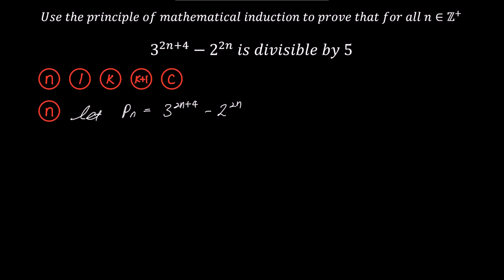Next, step 1 involves checking if the first term is true. p1 equals 3 to the power of 2 plus 4 minus 2 to the power of 2, which simplifies to 3 to the power of 6 minus 4, and that equals 729 minus 4, which is 725. Since this value can be expressed as 5 times 145, it is divisible by 5, so the first term is true.